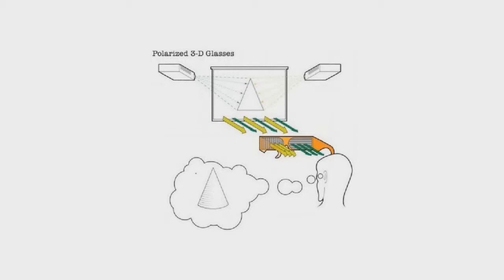Here we have a person using polarized 3D glasses. There are two projectors: one shooting a vertical light image to the screen, and one shooting a horizontal light image to the screen. As the images bounce off the screen, one eye filters out the horizontal light and the other eye filters out the vertical light. The brain then interprets these two image signals as one image and sees it as a three-dimensional image.